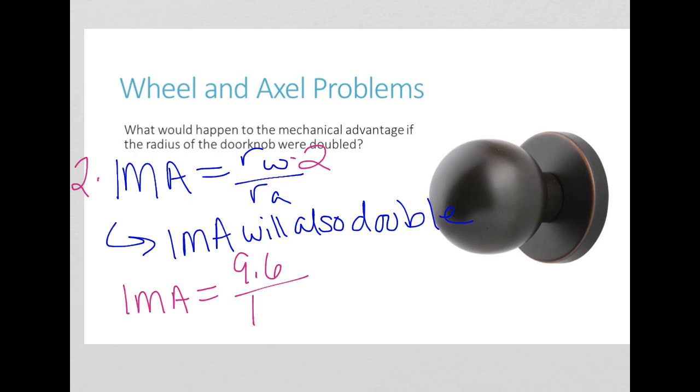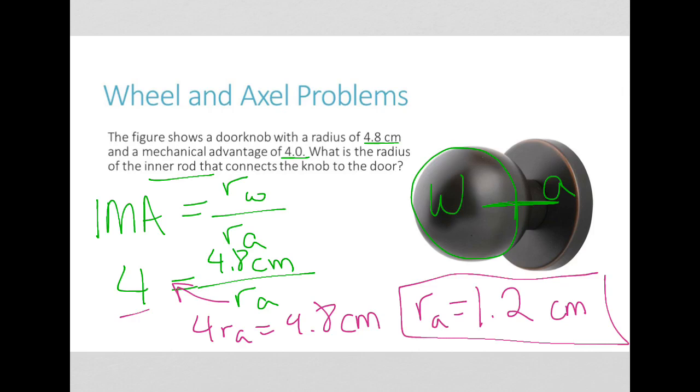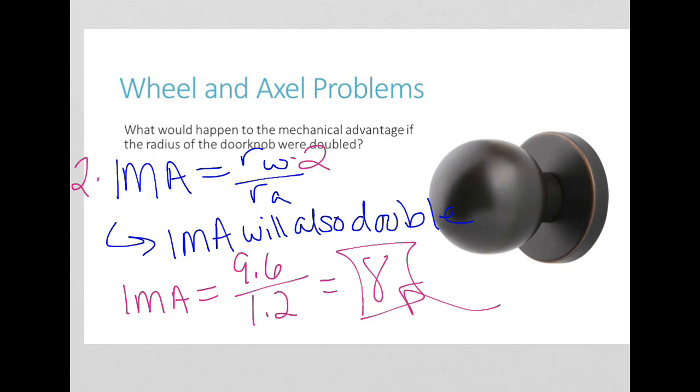The radius of my axle stays the same. That was 1.2. So 9.6 divided by 1.2 equals 8, and that is double of the 4 that I had last time. Therefore, I have the exact same answer. The IMA will also double.